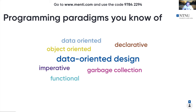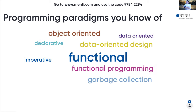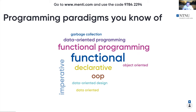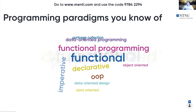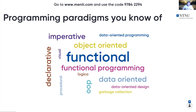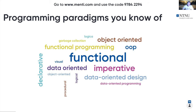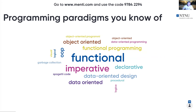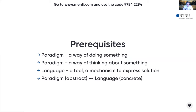So paradigm is kind of a way of thinking about something — a particular way of doing something. It's an abstract term. A language, as highlighted by Per Morten, is a tool — a mechanism to express a certain solution. Paradigms are abstract and languages are concrete. What that means is you should not say 'C++ is an object-oriented language,' because object-oriented is a paradigm and a language by definition is a concrete thing which cannot be abstract.